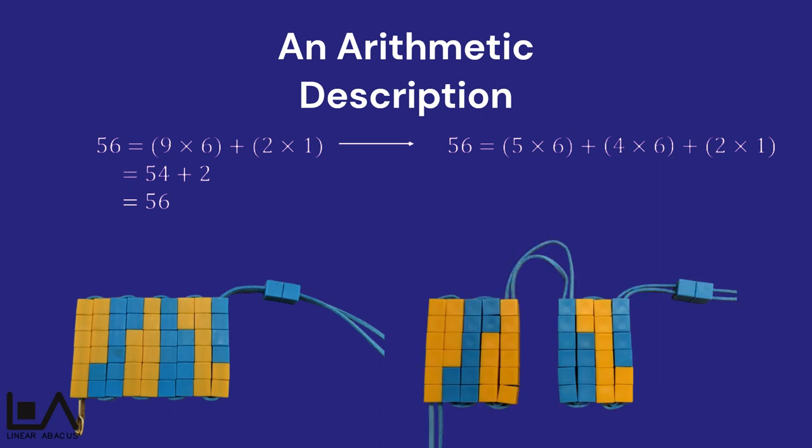This is clearly shown in the second figure, where the 9 times 6 array has been split into 2 arrays. This means that 9 times 6 is the same as 5 times 6 and 4 times 6.